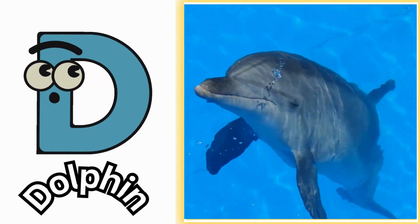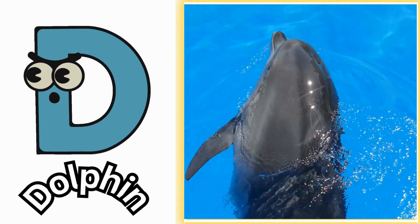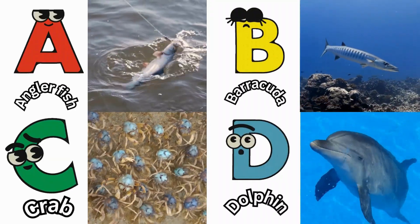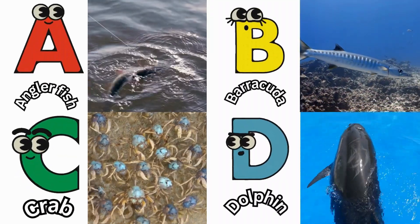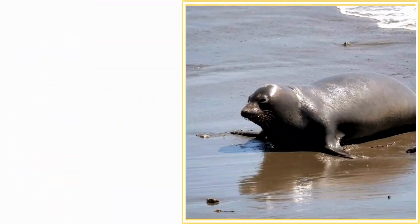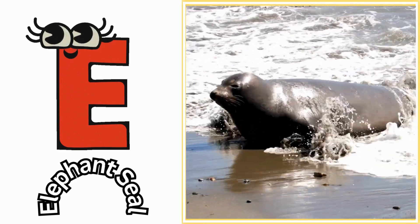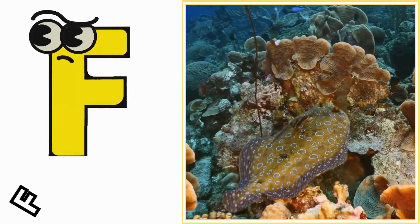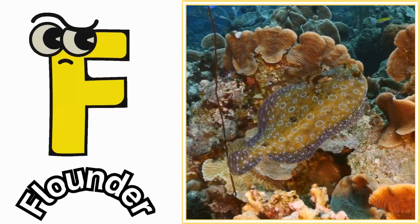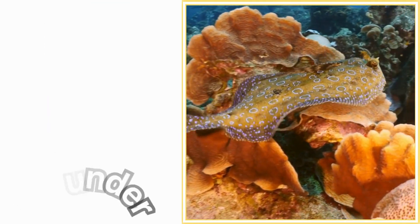D is for dolphin. Duh, dolphin. E is for elephant seal. Ah, elephant seal. F is for flounder. Fuh, flounder.